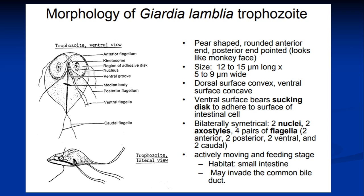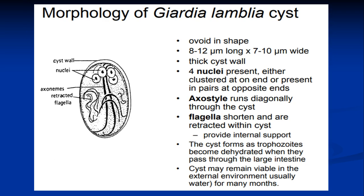This is the cyst of this organism. As you can see, it is an oval structure with a cyst wall. The trophozoite has two nuclei, while the cyst has four nuclei, and the flagella are present but retracted inside the cyst itself. Formation of the cyst is called encystation, while trophozoites coming out of a cyst is called excystation.